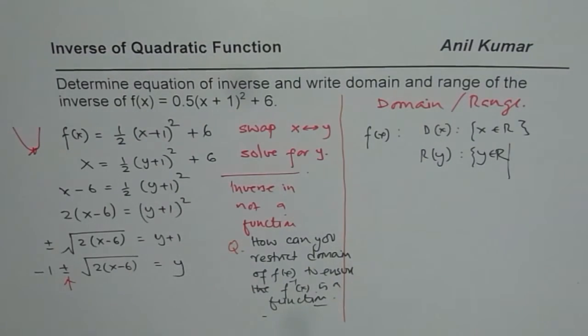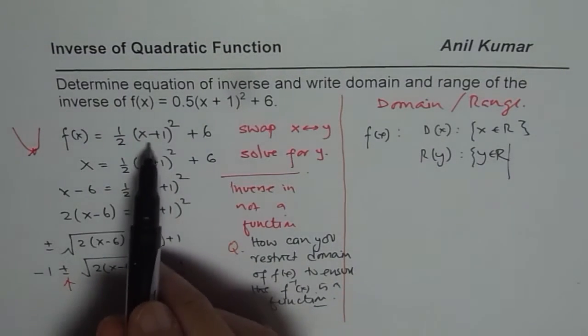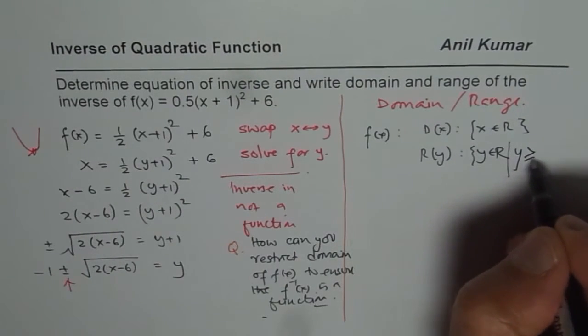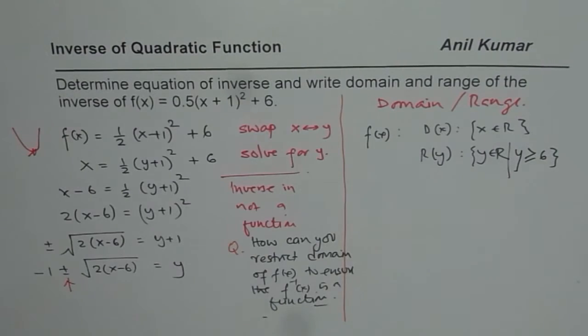So this opens upwards. So we need to find the vertex which is at -1 and 6. So 6 is the minimum value. So it is greater than or equal to 6.